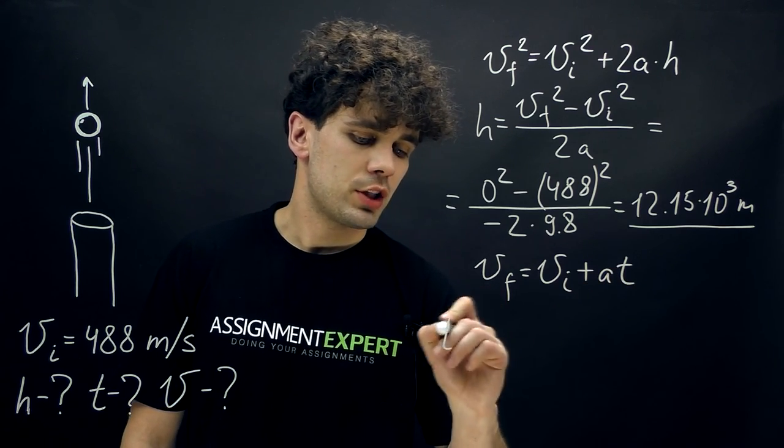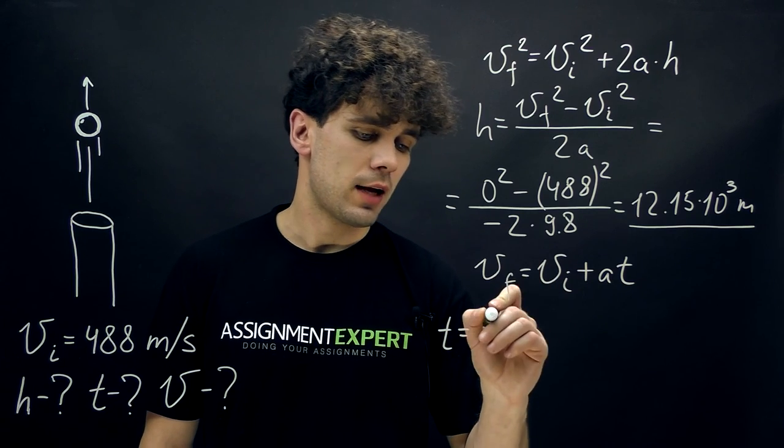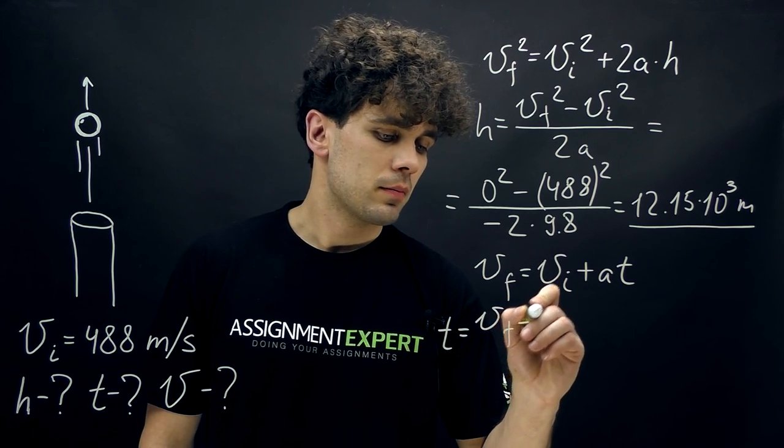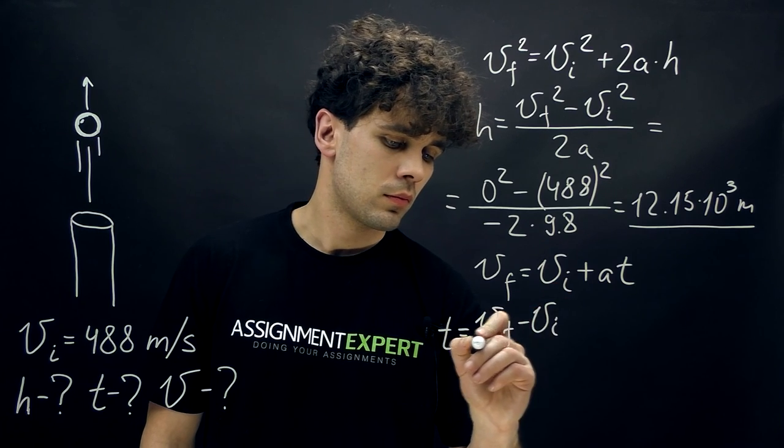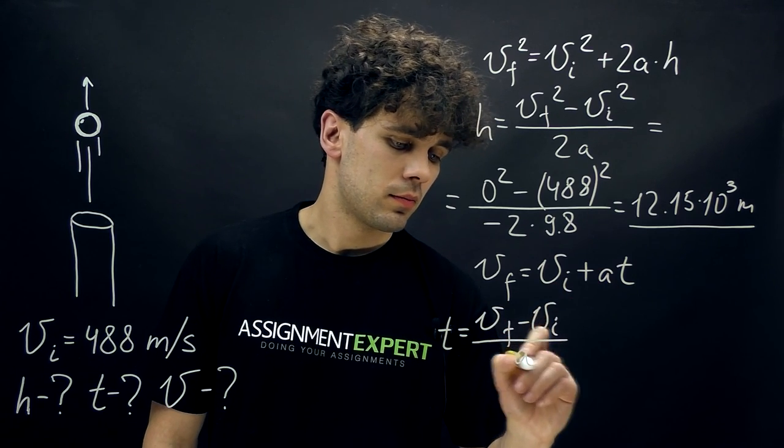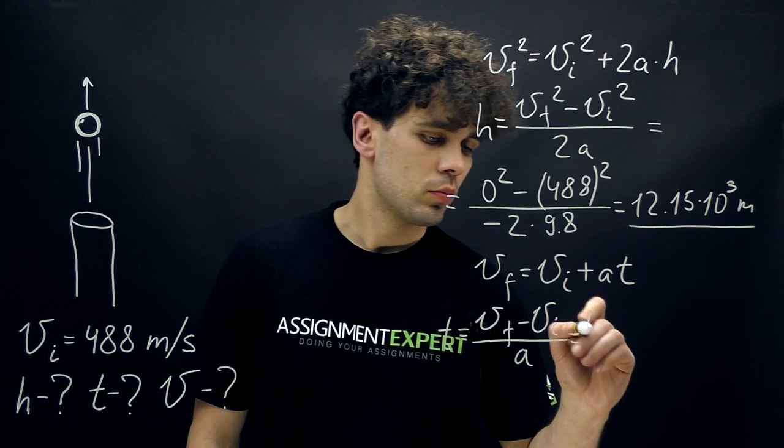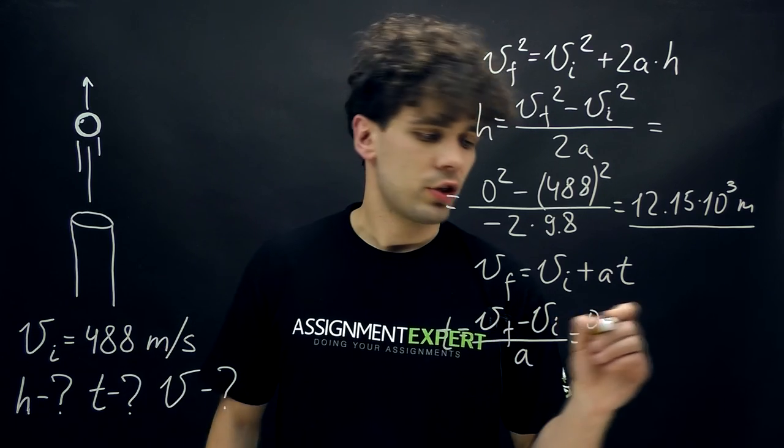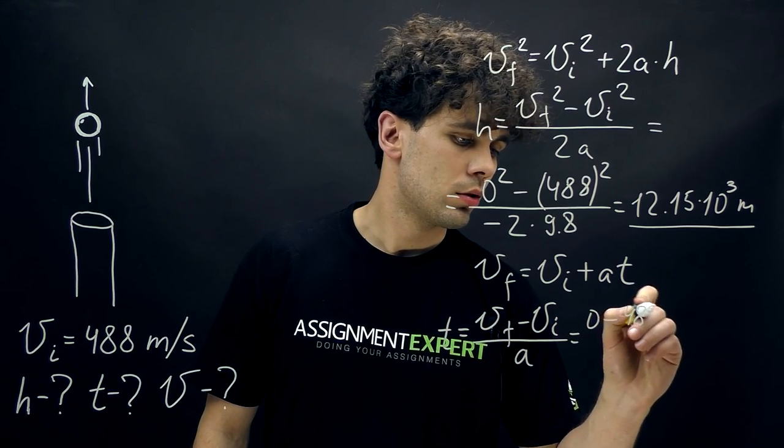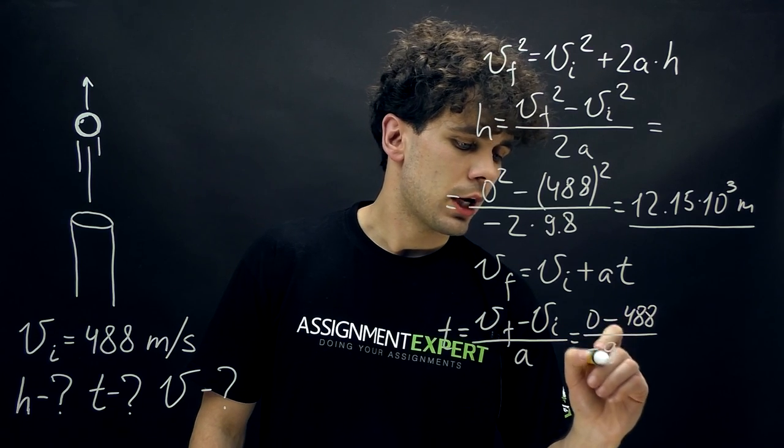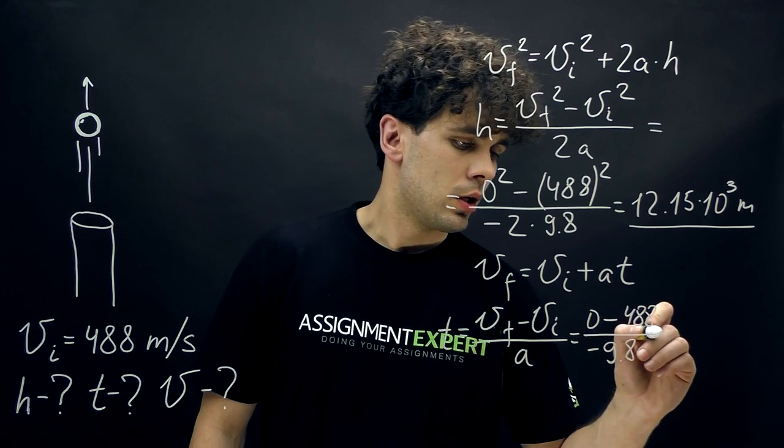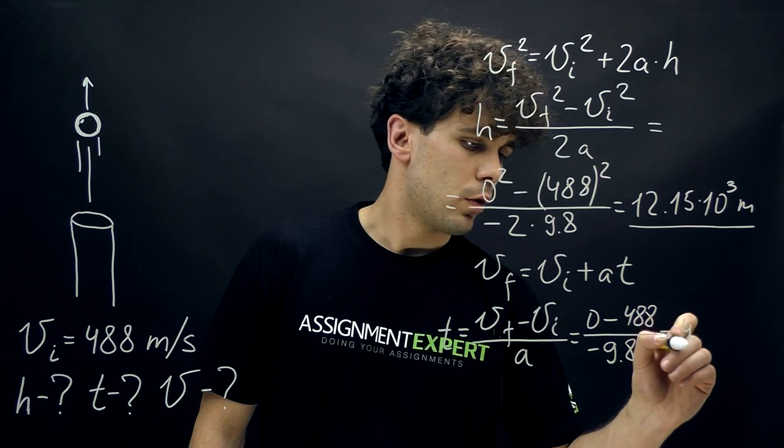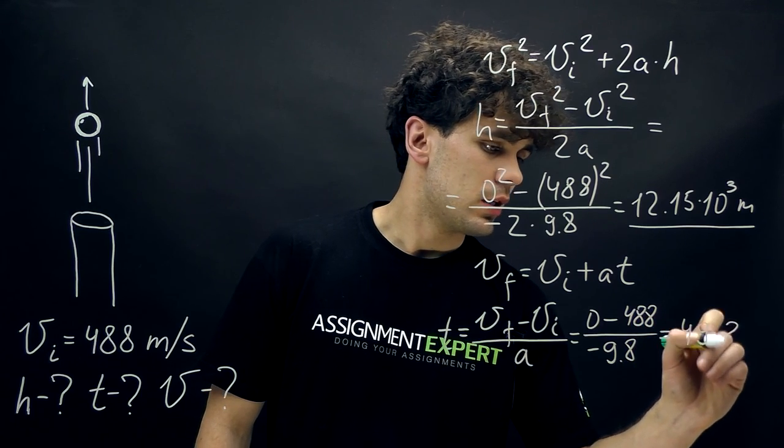So from here T equals Vf minus Vi over A. And this is 0 minus 488 over negative 9.8, and this is equal to 49.8 seconds.